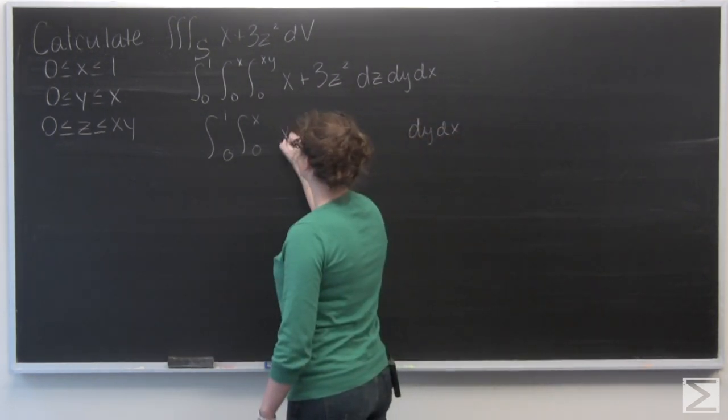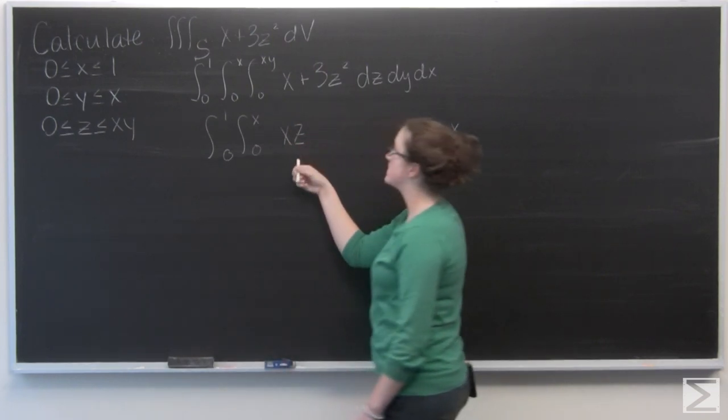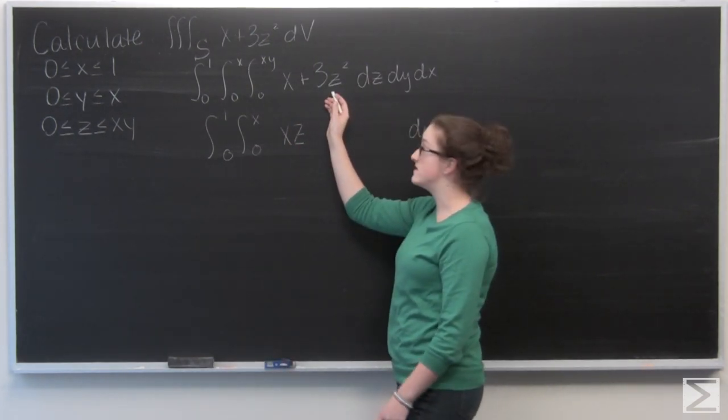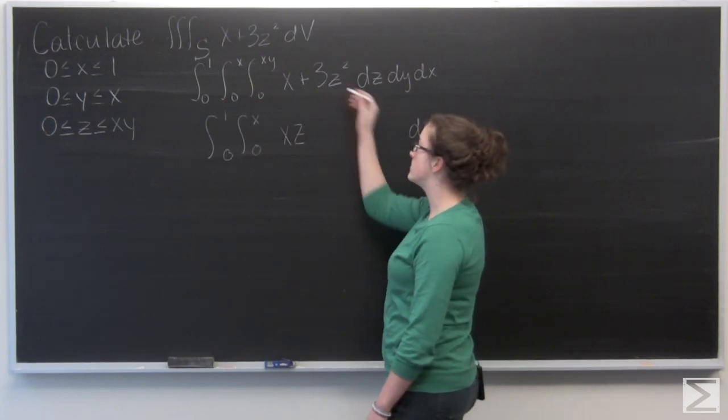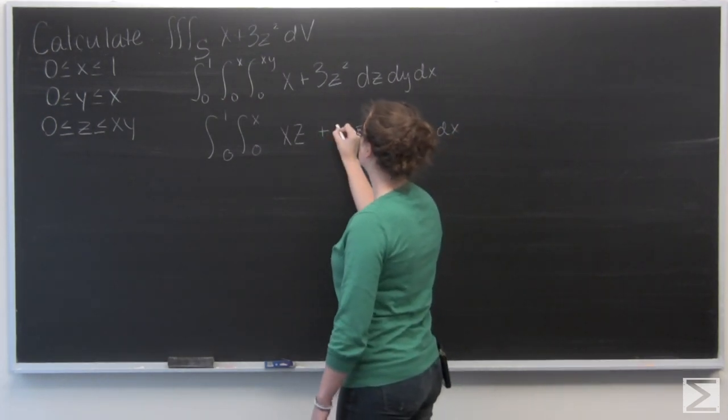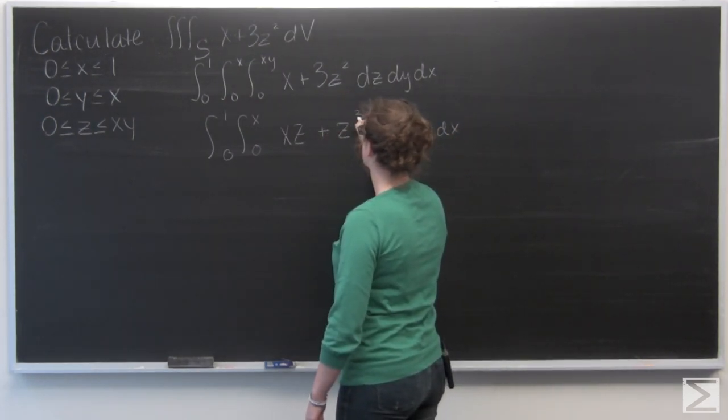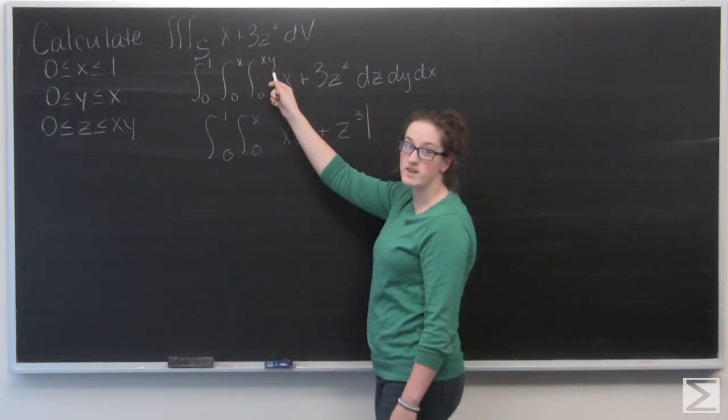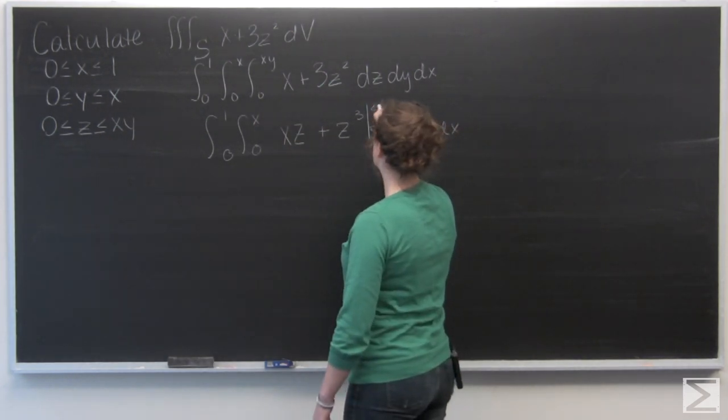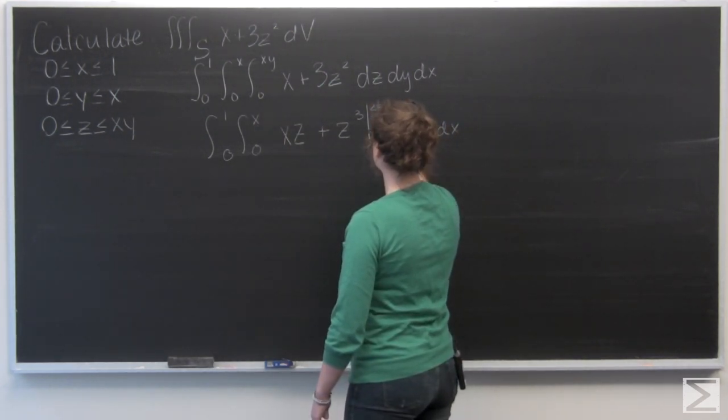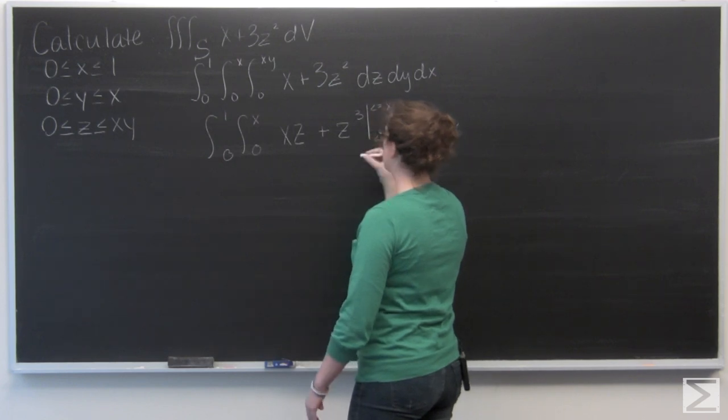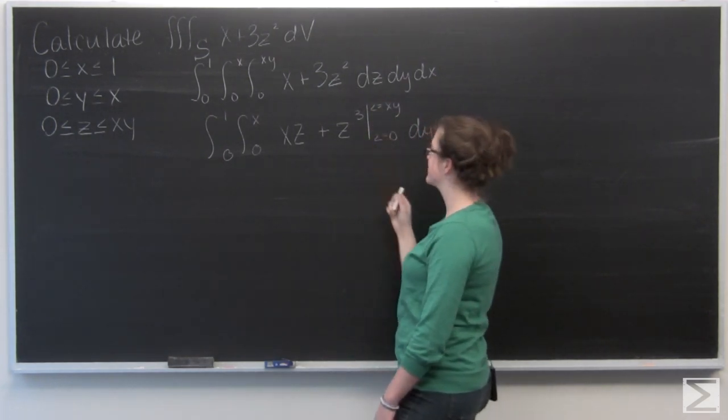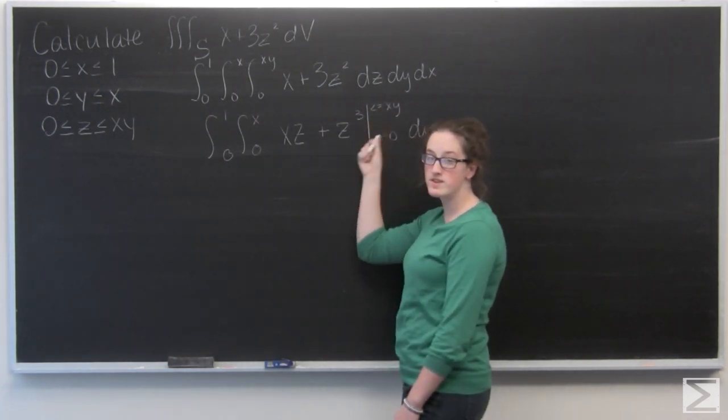So that term is going to become xz. This one is a z, so it's going to become z to the third. Now we want to evaluate from z equals xy to z equals zero. Oh, other way. Zero to xy. Okay, so I'm just going to plug those in.